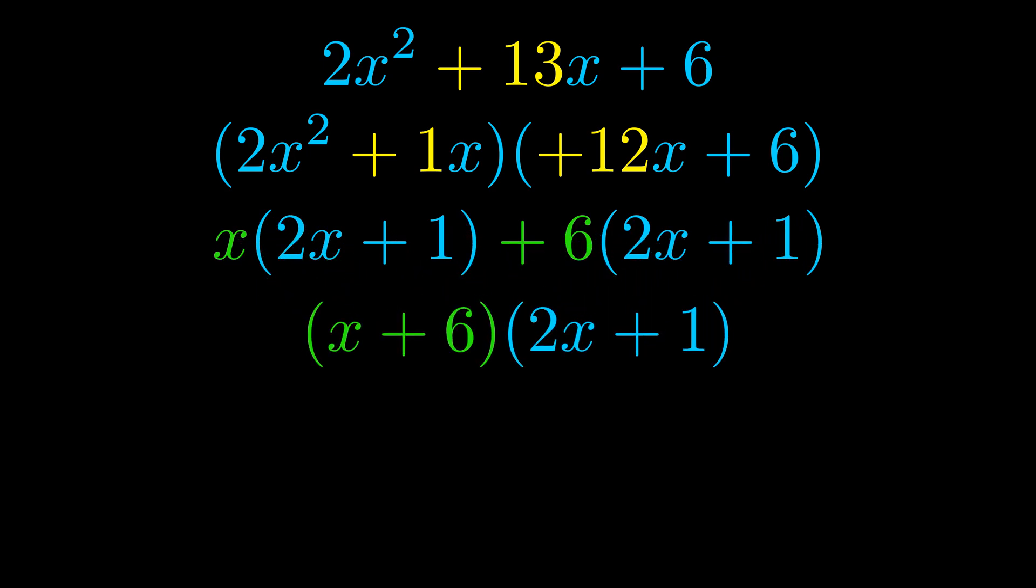The blue values are the same. Those blue values will become one of our factors, and we will combine the two green values, the GCFs that we pulled out, to get the other one. And that is our fully factored equation.